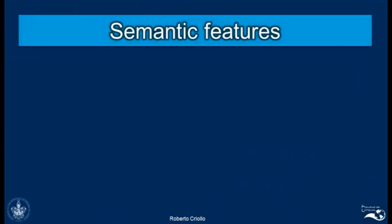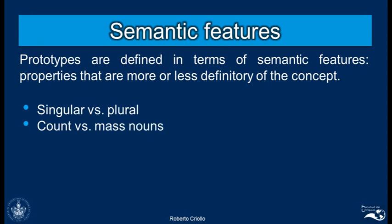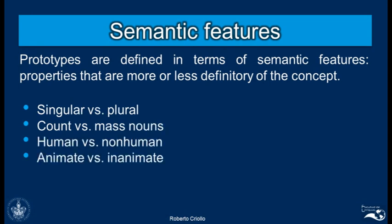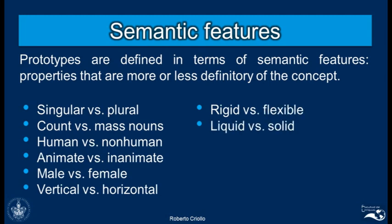The question is, what makes up a prototype? A prototype can be defined in terms of semantic features. That means there are central properties that are going to be more or less defining of the concept. For example, some of the semantic properties we can mention are: singular versus plural, count versus mass nouns, human versus non-human, animate versus inanimate, male versus female, vertical versus horizontal, rigid versus flexible, and liquid versus solid. We're going to provide some examples now to show how semantic features are important in the definition of a prototype.